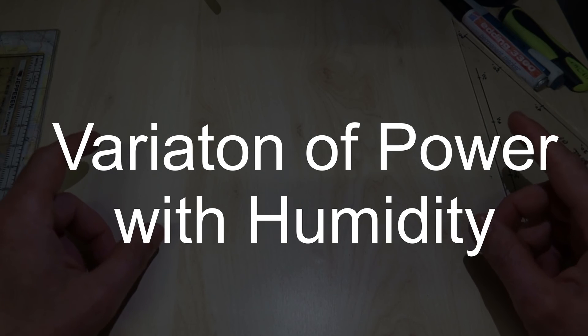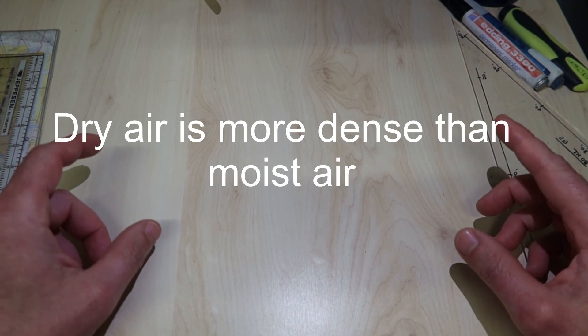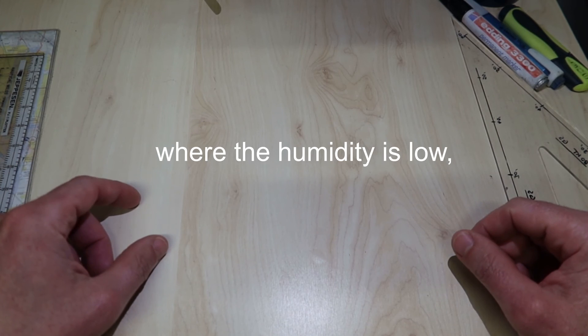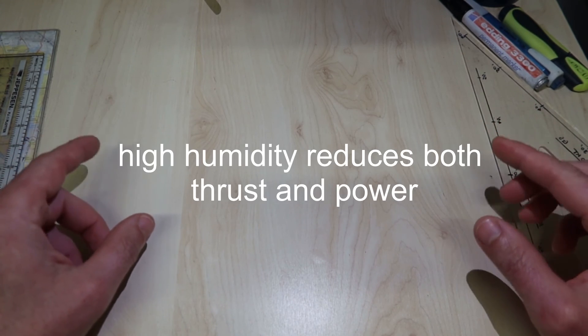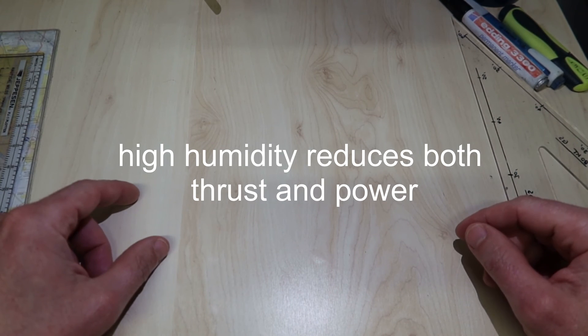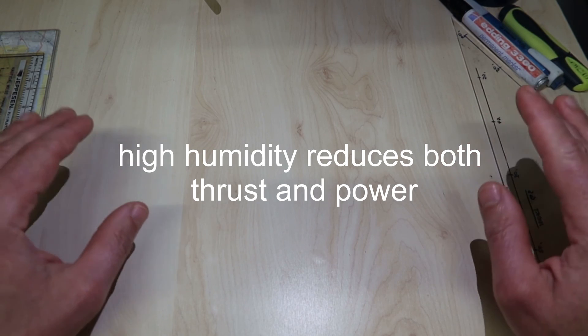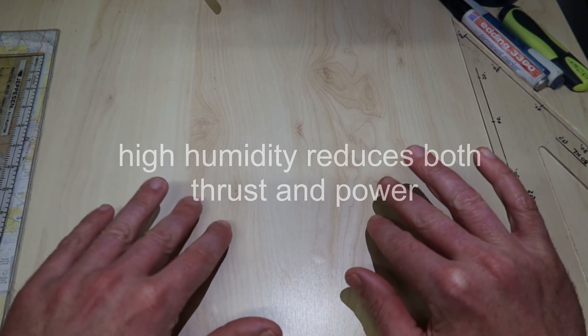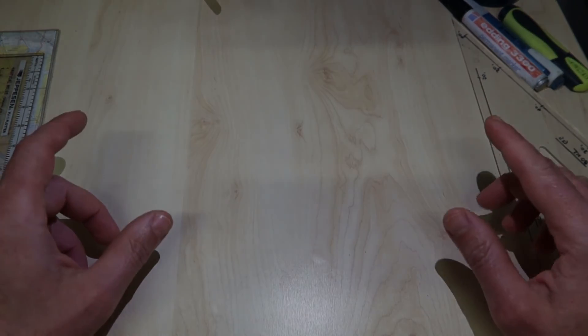Variation of power with humidity. Dry air is more dense than moist air. Where the humidity is low, thrust and power are greater. High humidity reduces both thrust and power. Some manufacturers provide graphs for 80% relative humidity, which show a 3-4% loss of power.